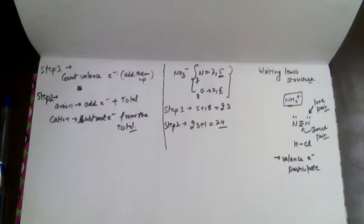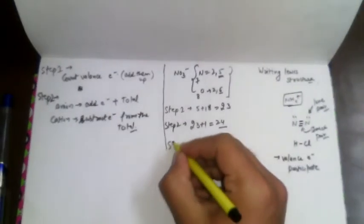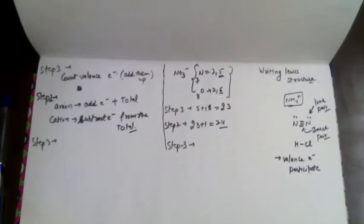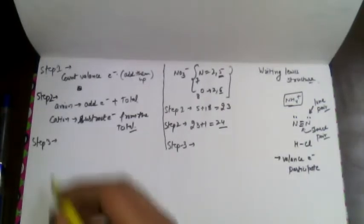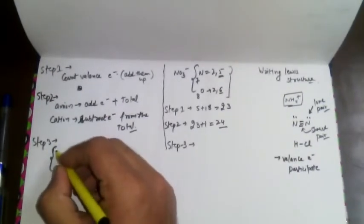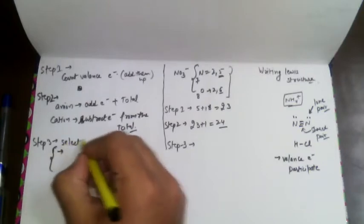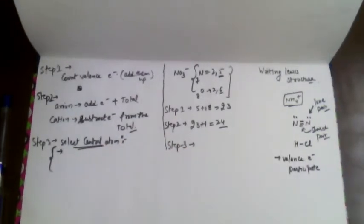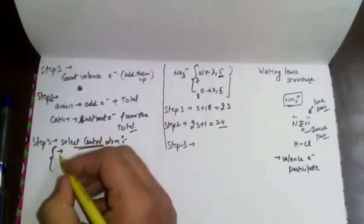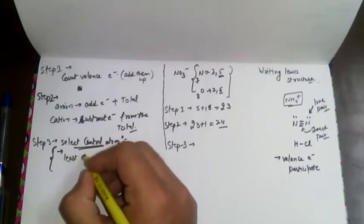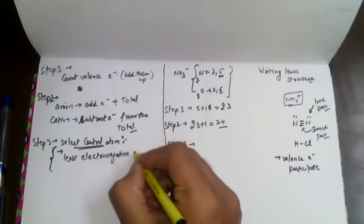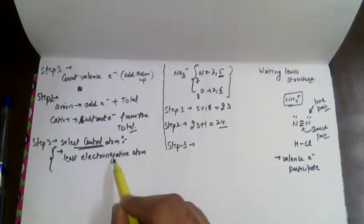This completes step two. Step three is to select the central atom. One important point: we always prefer the least electronegative element as the central atom. Also, monoatomic atoms such as hydrogen, fluorine, and chlorine always occupy terminal positions — they are never placed as the central atom. Based on our intelligent guess, nitrogen will act as the central atom in NO3 minus, with three oxygen atoms arranged around it.